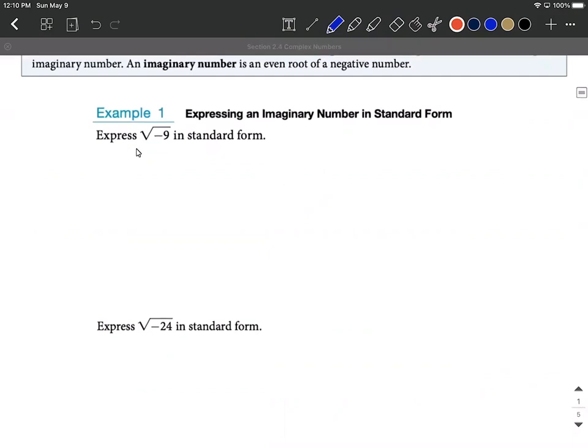All right, so we want to express the square root of negative nine in standard form, so that a plus bi. So how I want to think about this is the square root of negative nine can be thought of as the square root of negative one multiplied by nine. I think that's pretty straightforward.